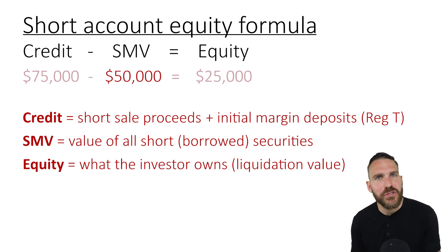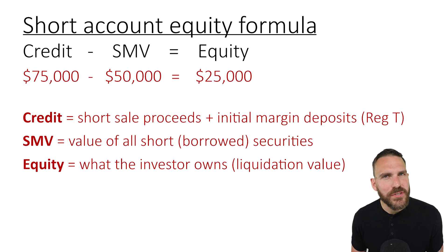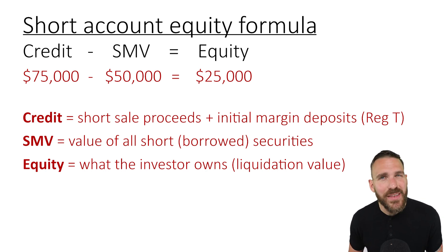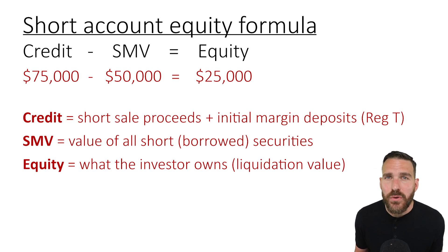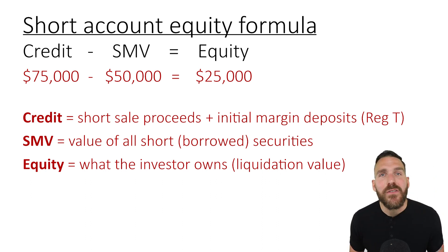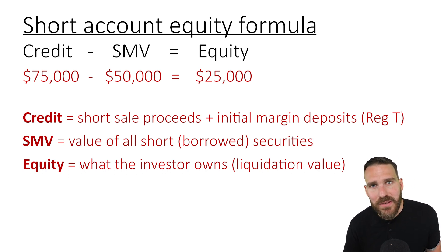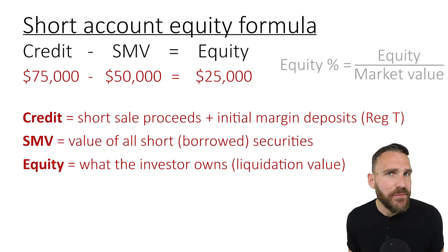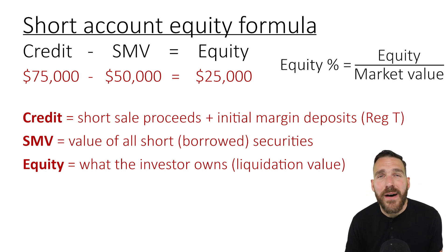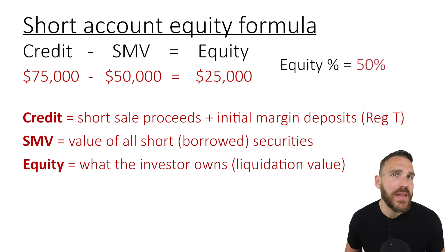For example, if the investor's credit balance is $75,000 and the SMV is $50,000, that leaves the investor with $25,000 of equity. If an investor established a short position for $50,000 and deposited exactly the Regulation T 50% requirement of $25,000, then the $50,000 short sale combined with the $25,000 deposit gives a credit balance of $75,000. You can also determine the equity level in a short margin account by dividing equity by SMV: $25,000 divided by $50,000 equals 50% — right at the 50% equity level.